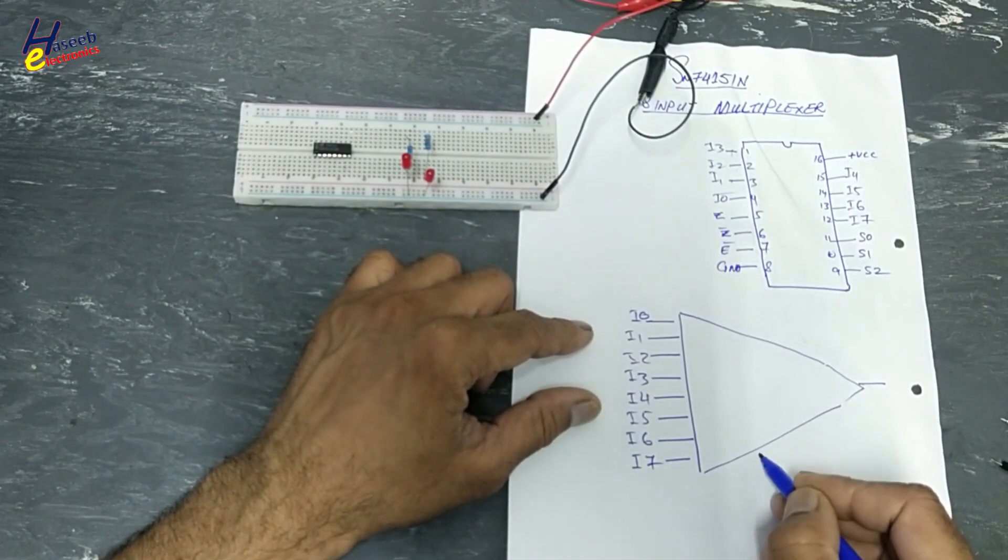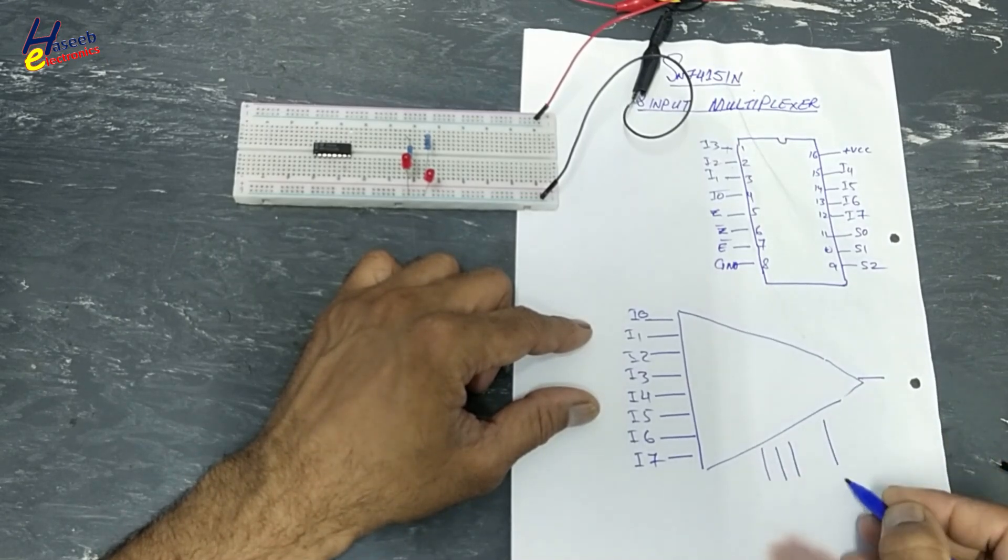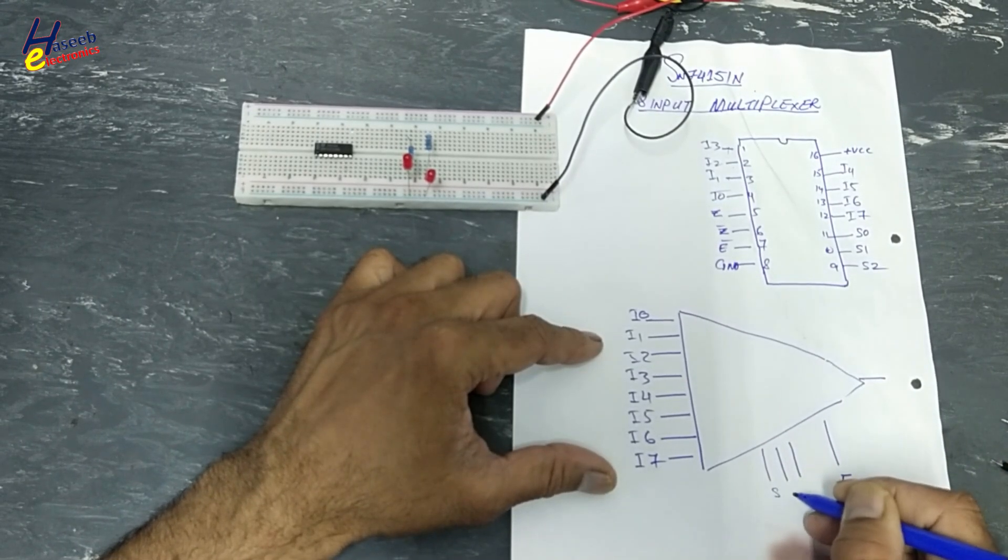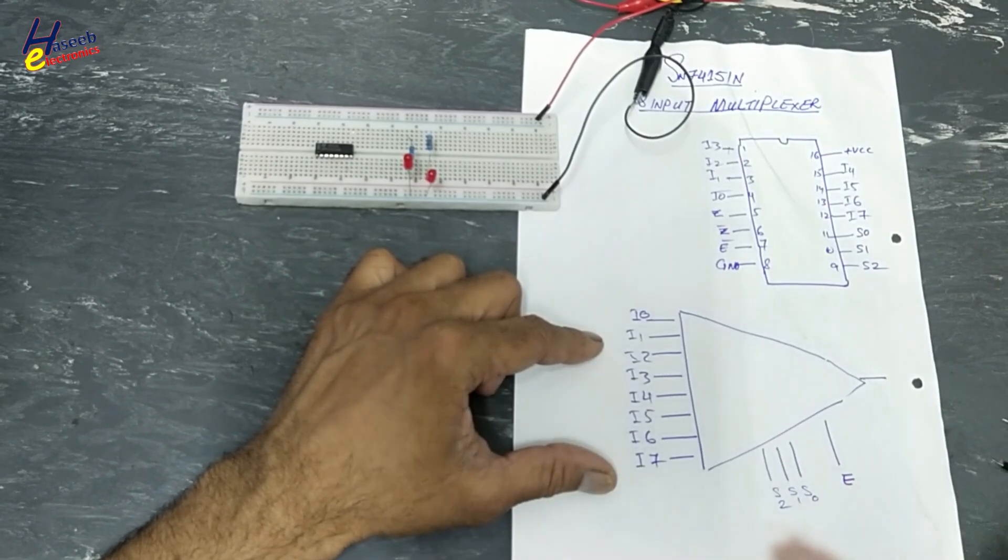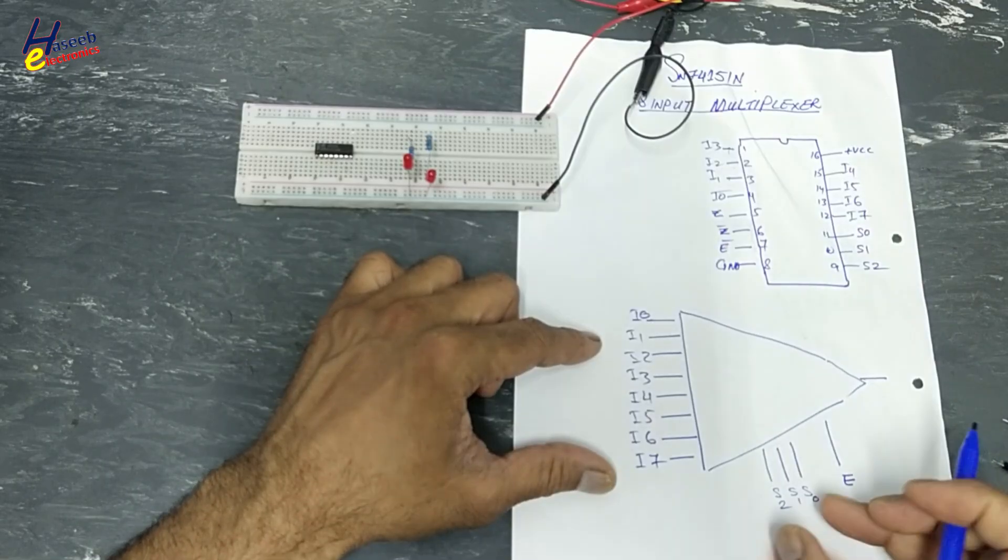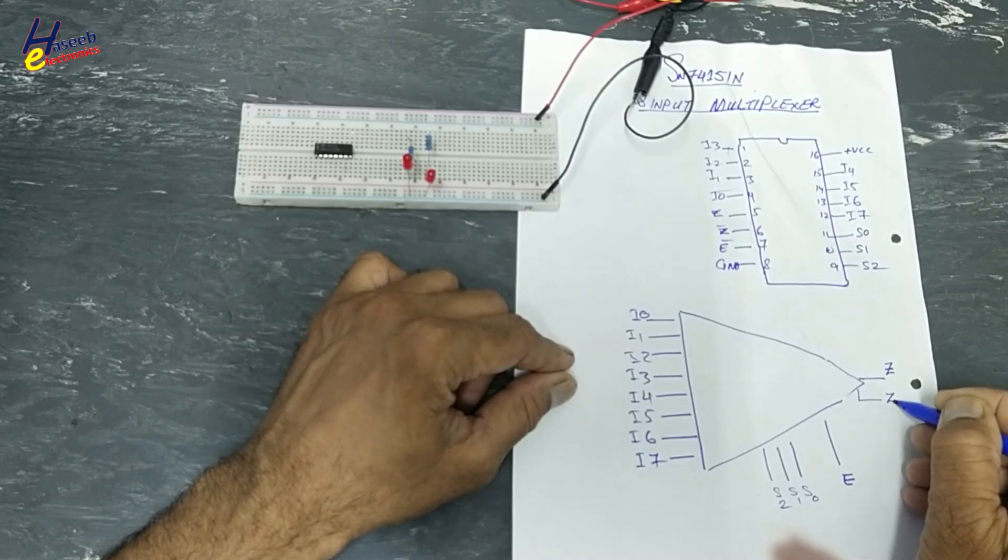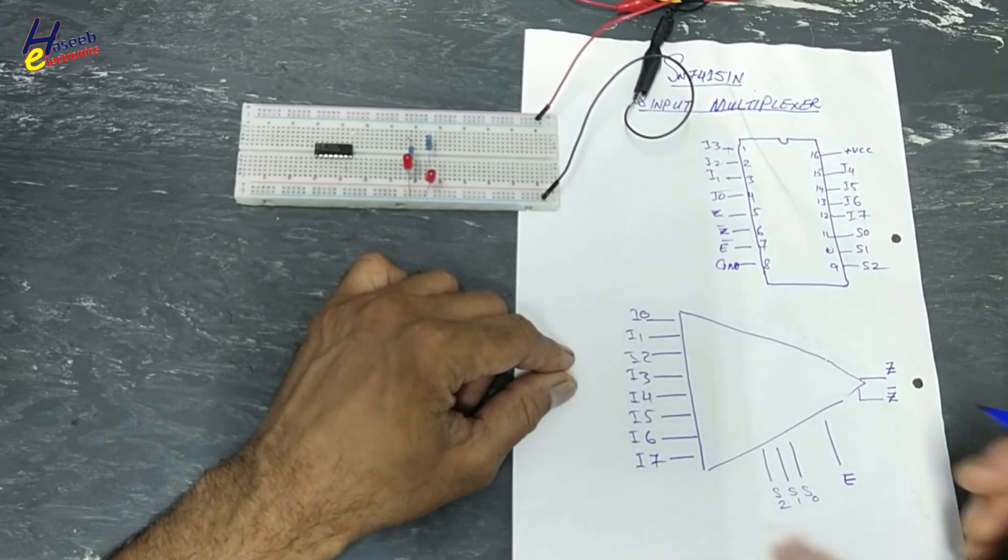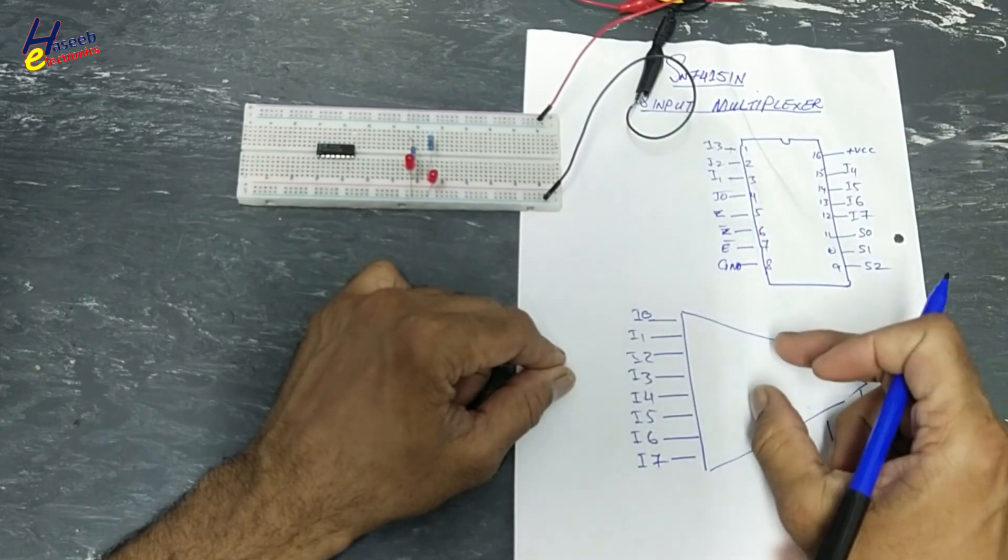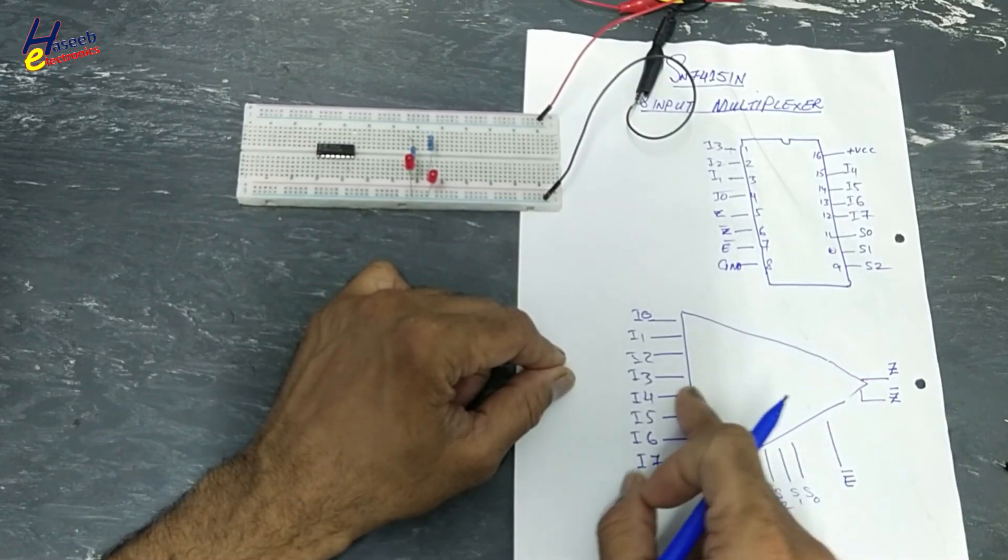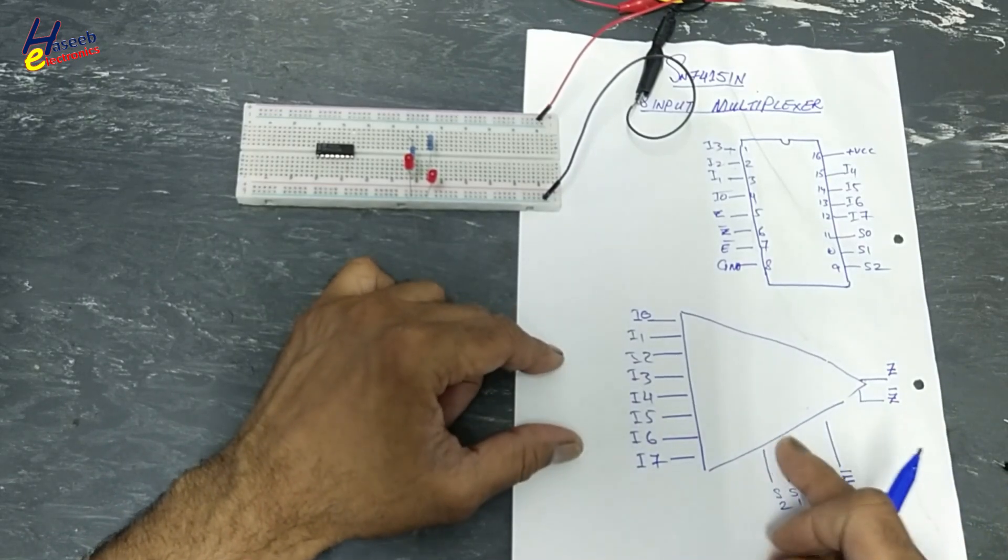Microcontroller will generate three control signals and one enable signal. These are called S signals, S0, S1, S2. These are select inputs. This is Z output. In parallel, it will provide inverted Z output. Normal and inverted output. Enable. This will disable or enable this chip. So it is control signal. And these are address selections.